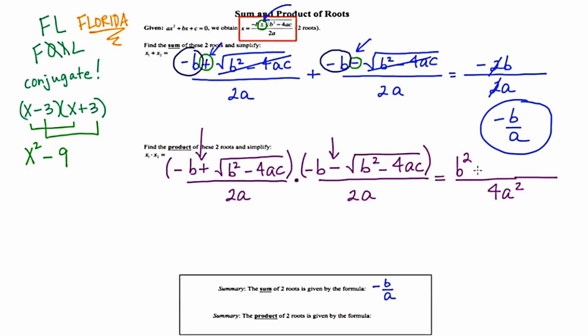A positive times a negative is a negative, and root chunk times root chunk is going to be just chunk, which is b squared minus 4ac. However, it's absolutely essential that I maintain the chunk of that chunk, and to do that, I need to use parentheses.